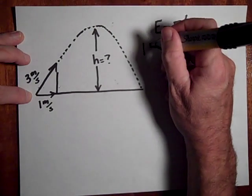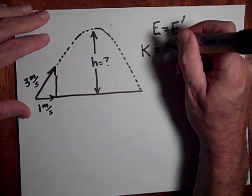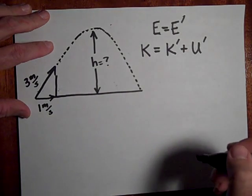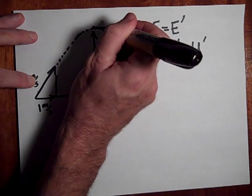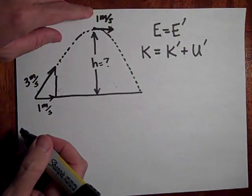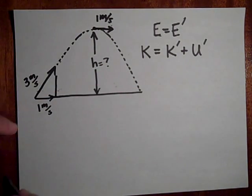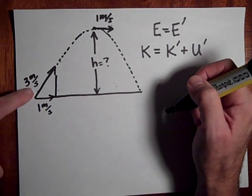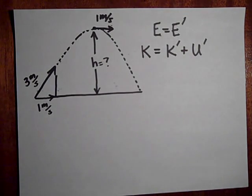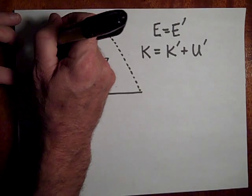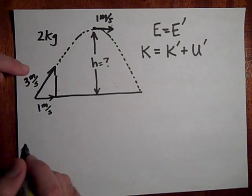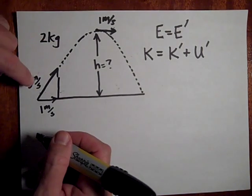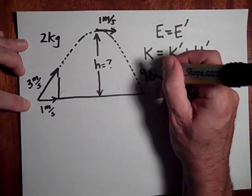The way you do this is: the kinetic energy at the bottom equals the kinetic energy plus potential energy at the top. At the top, the y-component of velocity goes to zero, but the x-component of 1 meter per second remains the whole way. At the bottom, all the energy is kinetic: one-half times mass times v-squared. Using a mass of 2 kilograms, that gives 9 joules of kinetic energy.